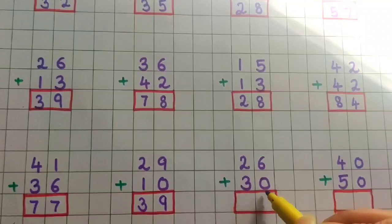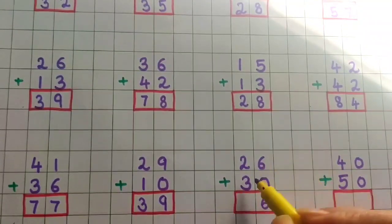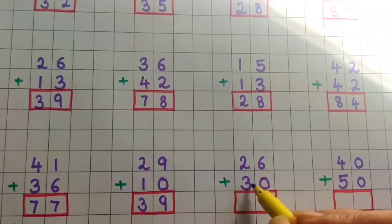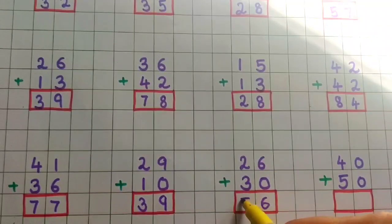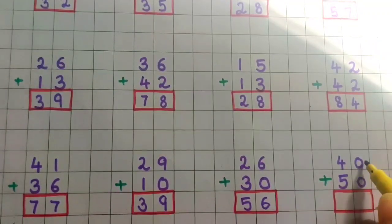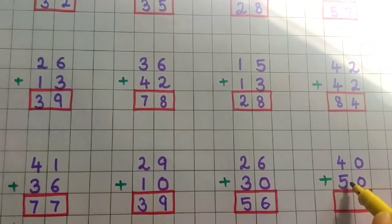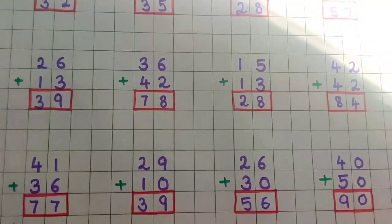26 plus 30. So 6 plus 0 is 6, and then 2 plus 3 is 5. So the answer is 56. Now next one: 40 plus 50. 0 plus 0 is 0, and 4 plus 5 is 9. So the answer is 90.